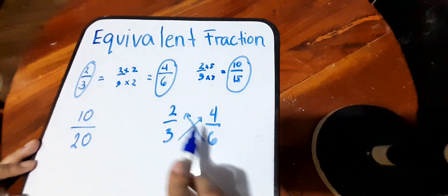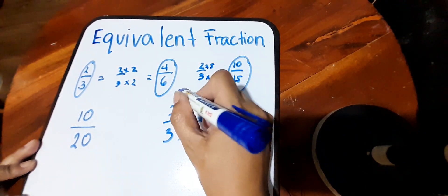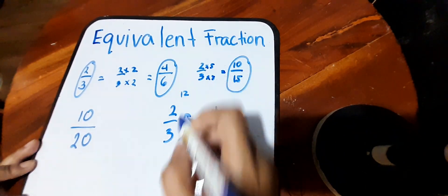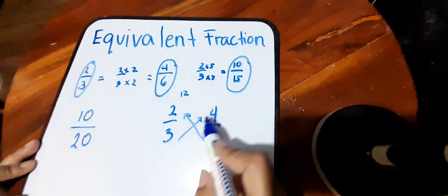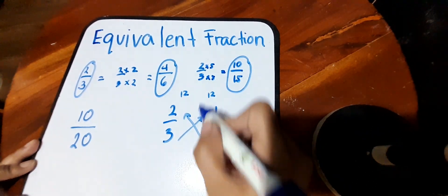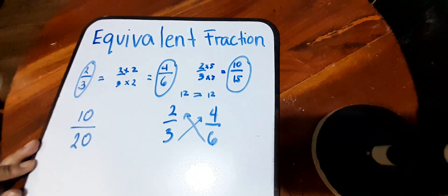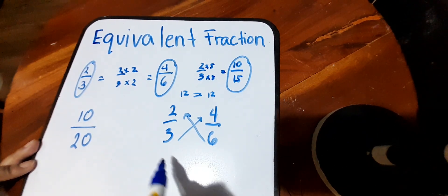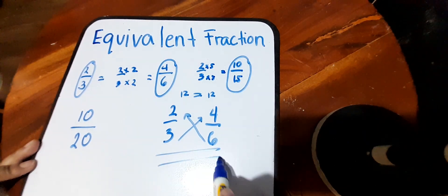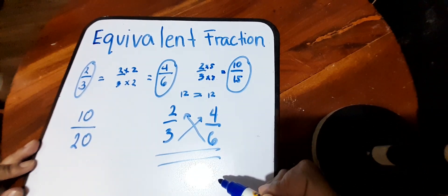So two times six, the answer will be twelve. And three times four, the answer is twelve. So if the products are equal or the same, meaning these fractions are equivalent.